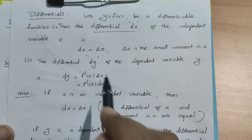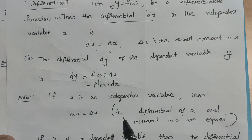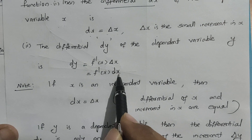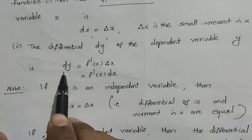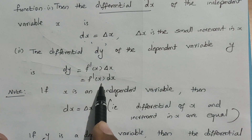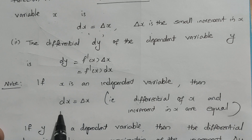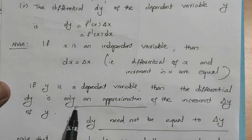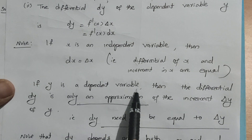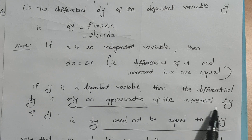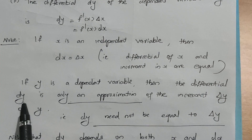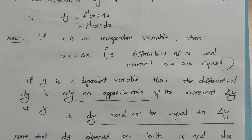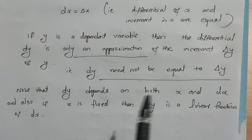dy equals F dash of X into delta X, which equals F dash of X into dx, since delta X and dx are the same for the independent variable. Note: if X is an independent variable then dx equals delta X, but if Y is the dependent variable then dy is only an approximate value of the increment delta Y — dy need not equal delta Y.